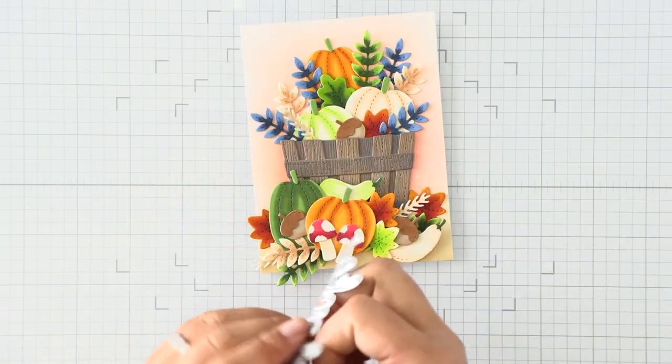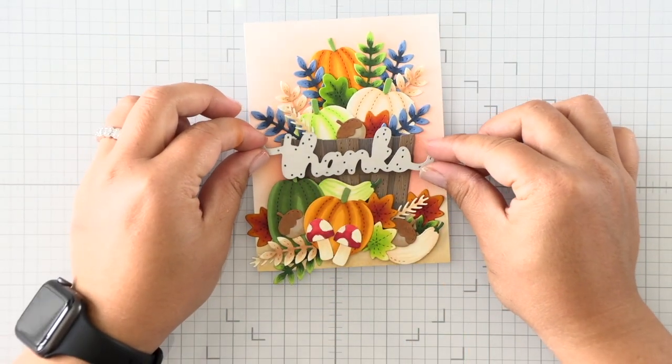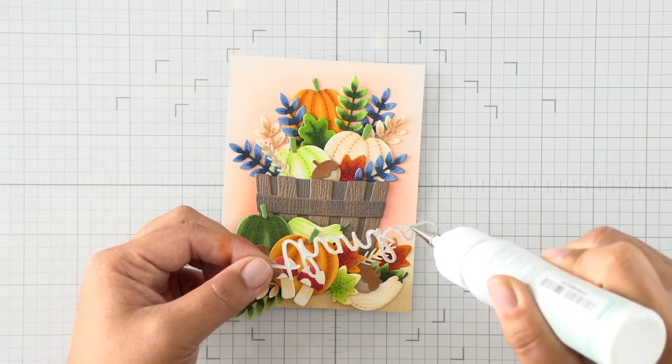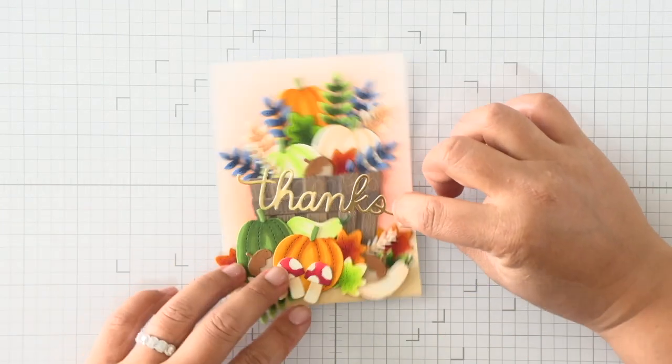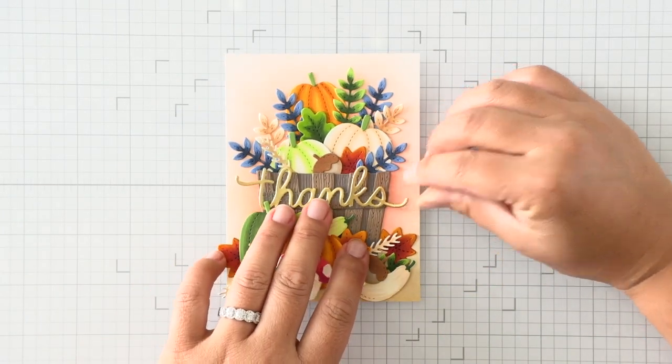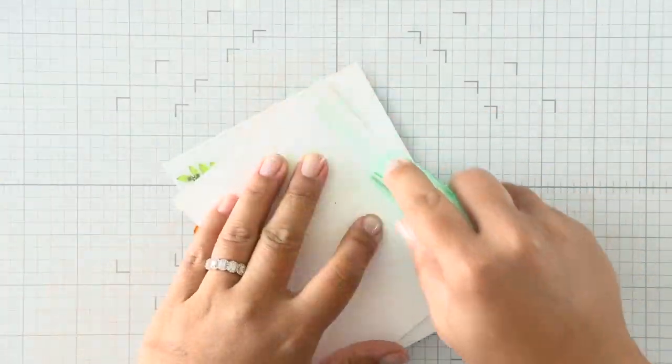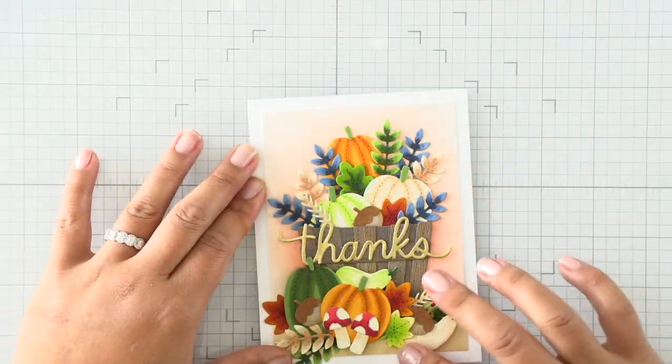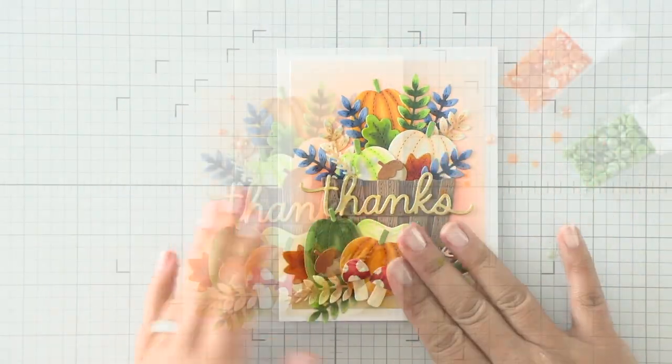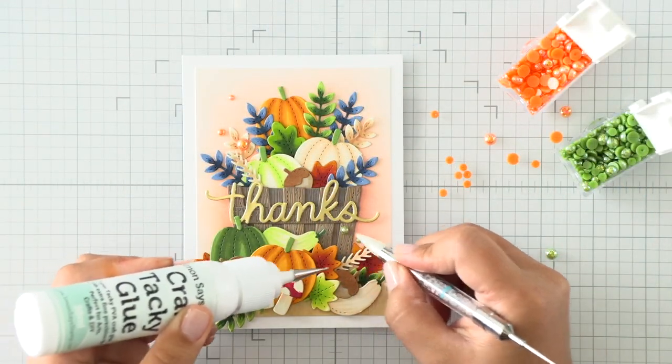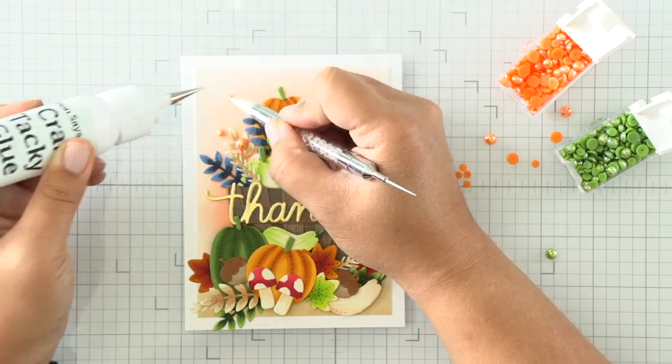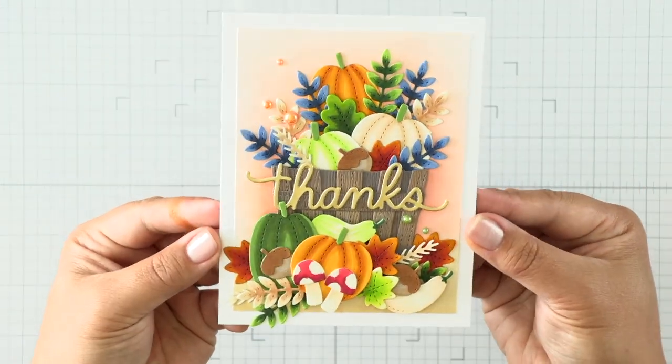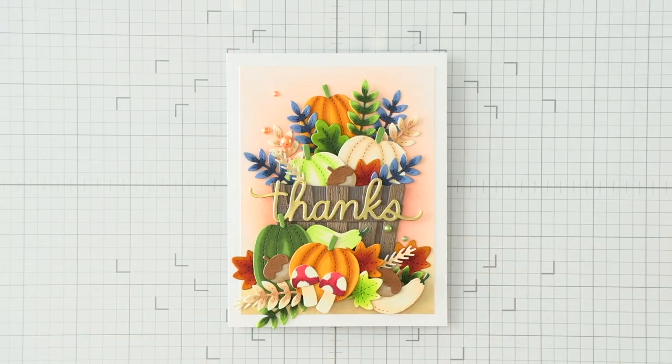Now that our fall basket is put together, I can go ahead and finish my card here with a sentiment. This is the new Thanks script die from Pretty Pink Posh as well, and I've just die cut it once with matte gold cardstock. Then I'm going to finish my card with some pretty new pearls from Pretty Pink Posh. I love their pearls - they come in rainbow colors and different sizes, and it's so easy to embellish your cards with. There are some pretty fall colors with this release, so I'm using the Pistachio and the Sunset Orange pearls here.